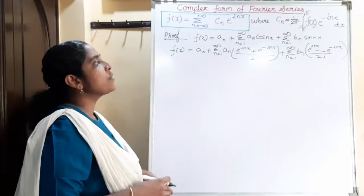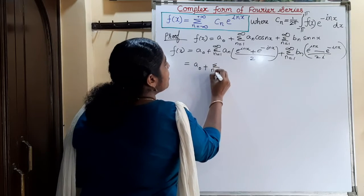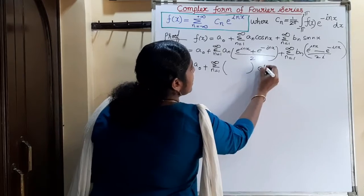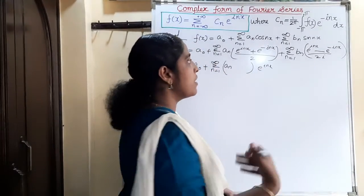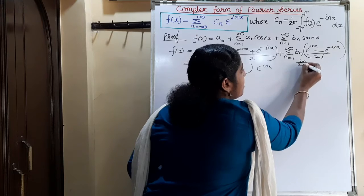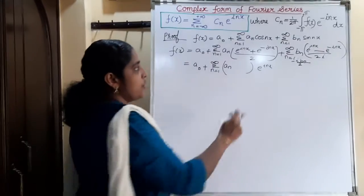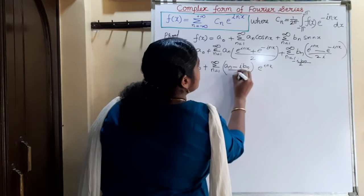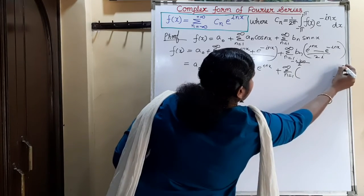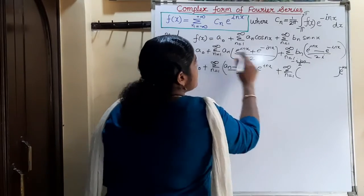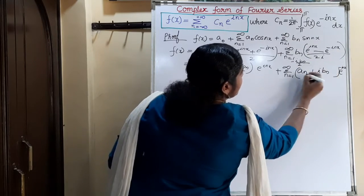Now we combine the coefficients of e^(inx) together and e^(-inx) together. The coefficient of e^(inx) is an/2 plus bn/(2i). Since i is in the denominator, we multiply numerator and denominator by i; since i² = -1, this becomes -ibn/2. So the coefficient of e^(inx) is (an - ibn)/2, and the coefficient of e^(-inx) is (an + ibn)/2.